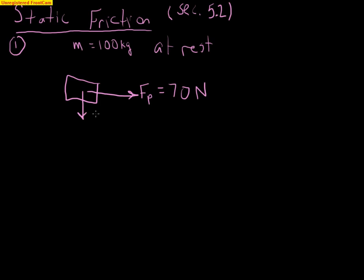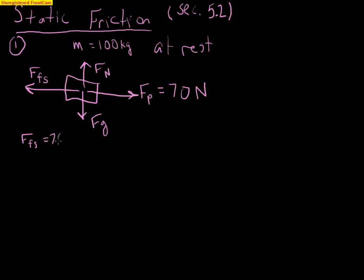In addition to this pushing force, we have the force of gravity and the normal force, and those would have to be balanced so that it doesn't accelerate up or down. We also have to have a force balancing the pushing force, and that would be the force of friction — static friction, so we put an S. If this force is 70 newtons, then the force of static friction is also 70 newtons. That's all there is to it.